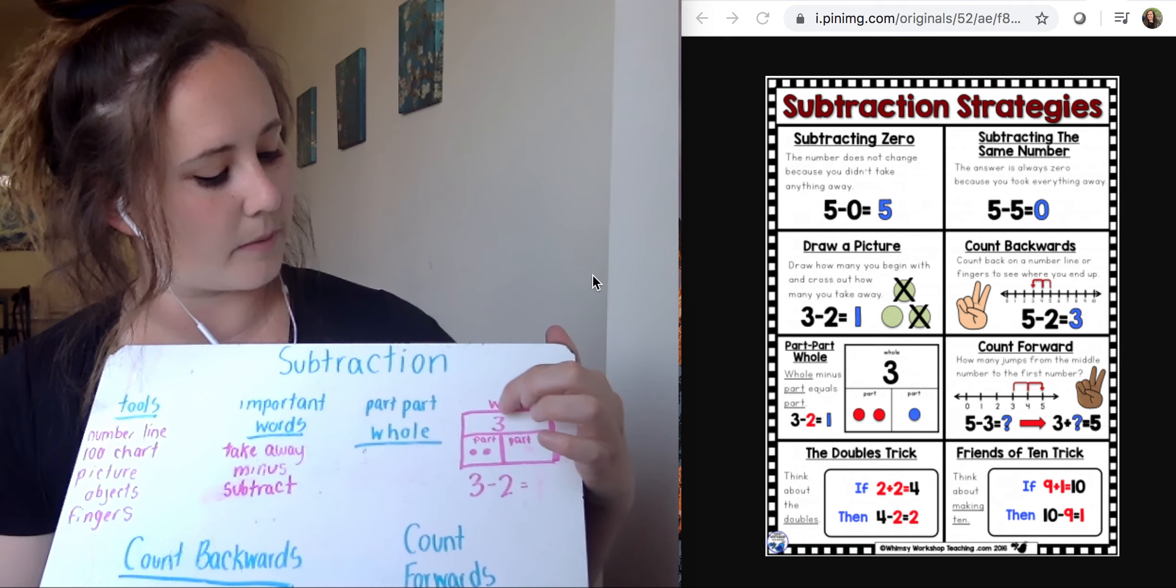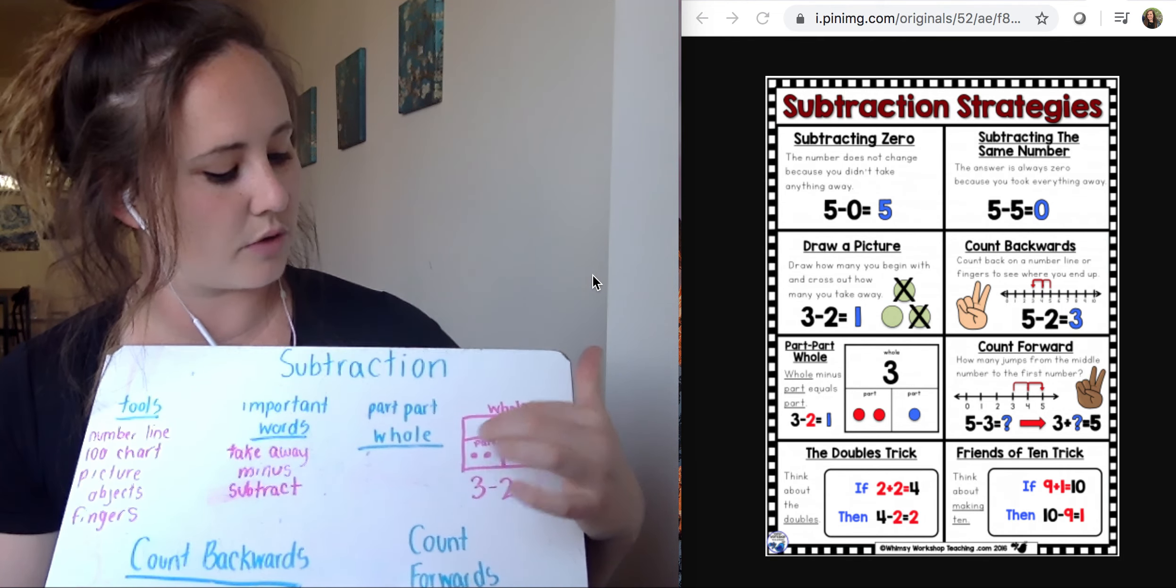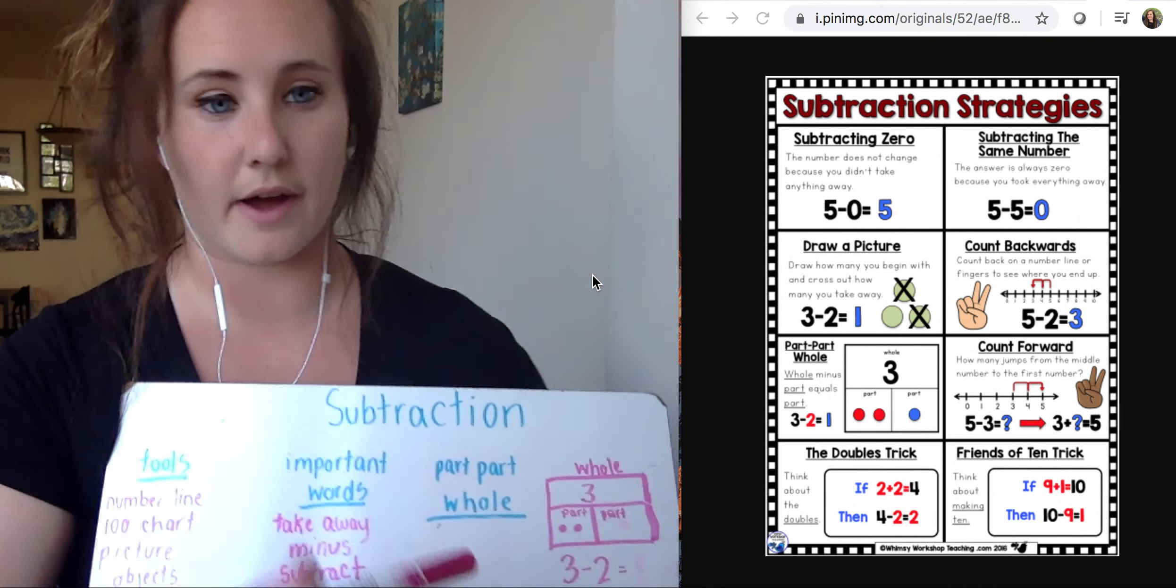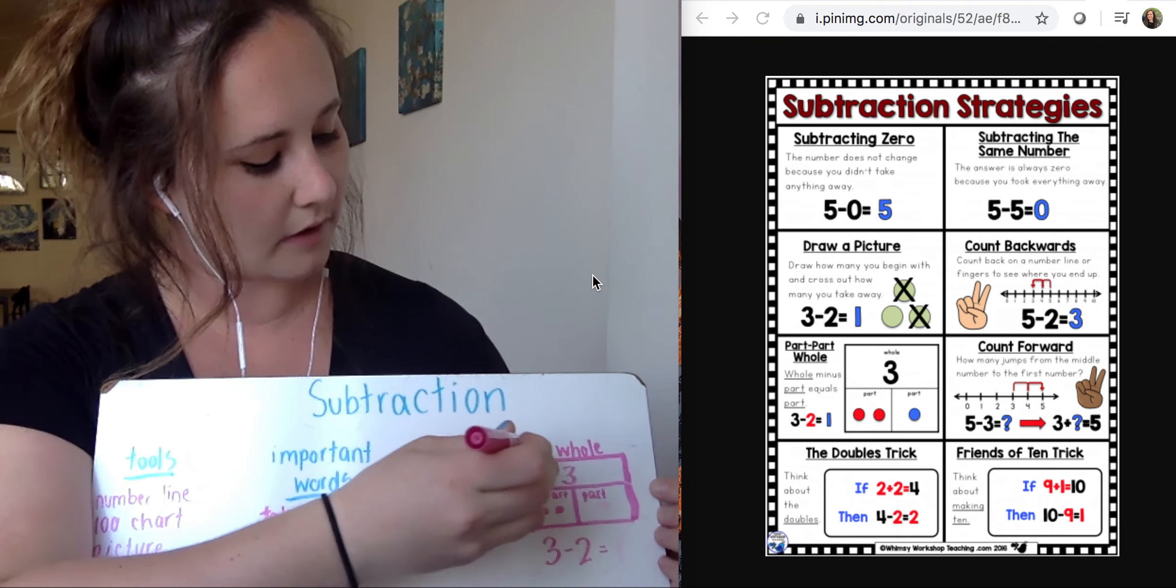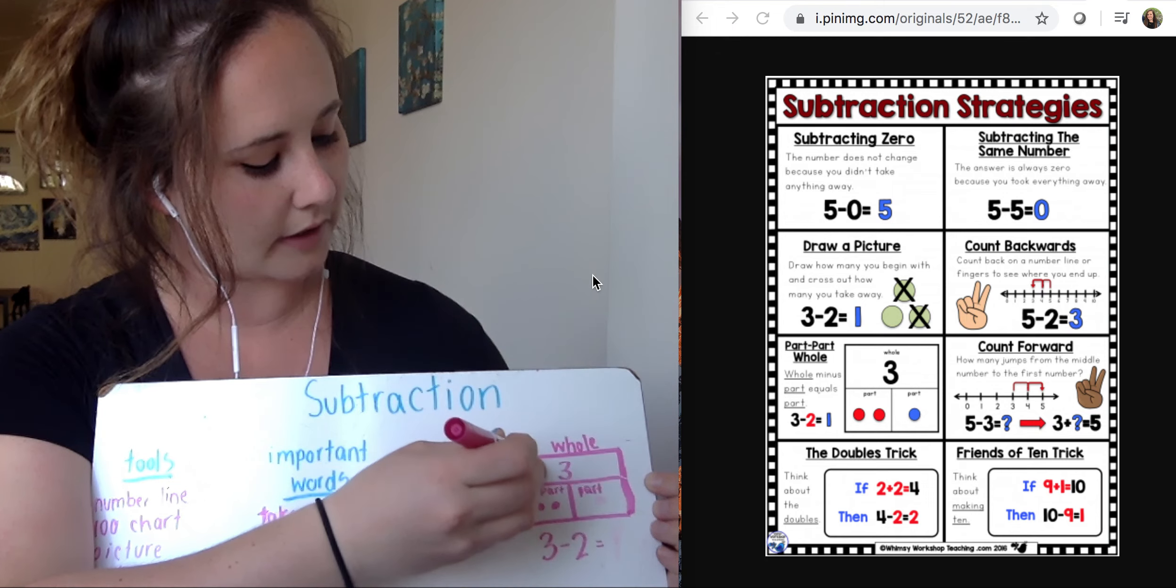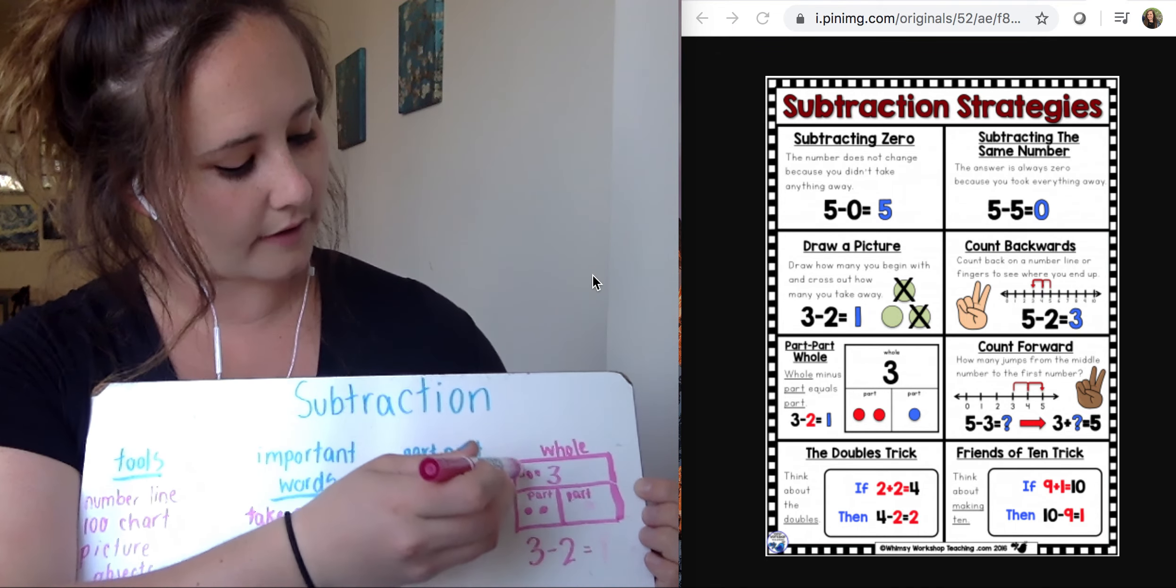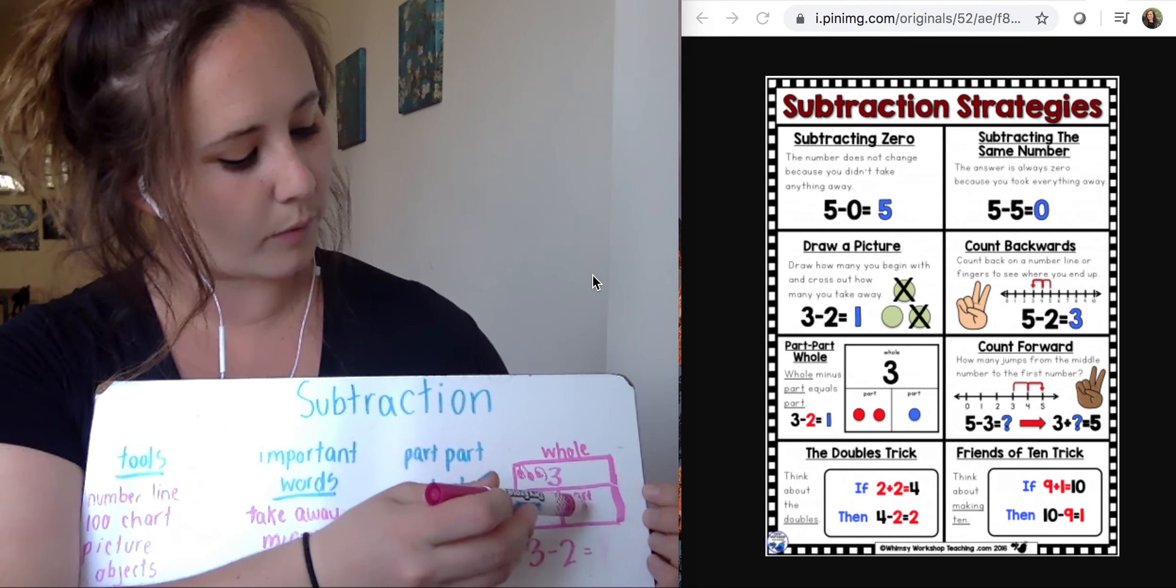So I know I start with my big number here, my three. And I have my two dots down here. So I could take away from my whole three, take away my part two, and see how many are left. So out of my whole here I have three. I'm taking away two. Let's cross out two. And how many do I have left? I have one left.